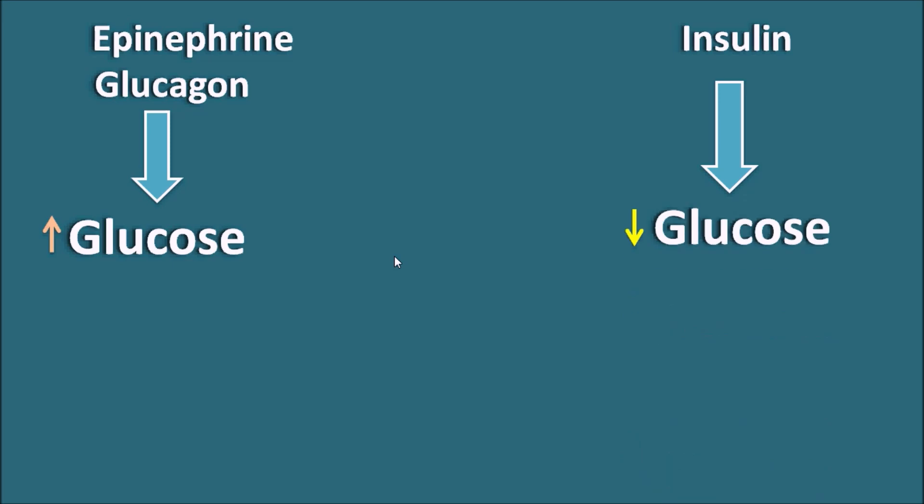The effect of epinephrine and glucagon is mediated by cyclic AMP, which increases the blood glucose levels. Cyclic AMP increases the glucose levels by affecting various mechanisms, which results in the regulated blood glucose levels.